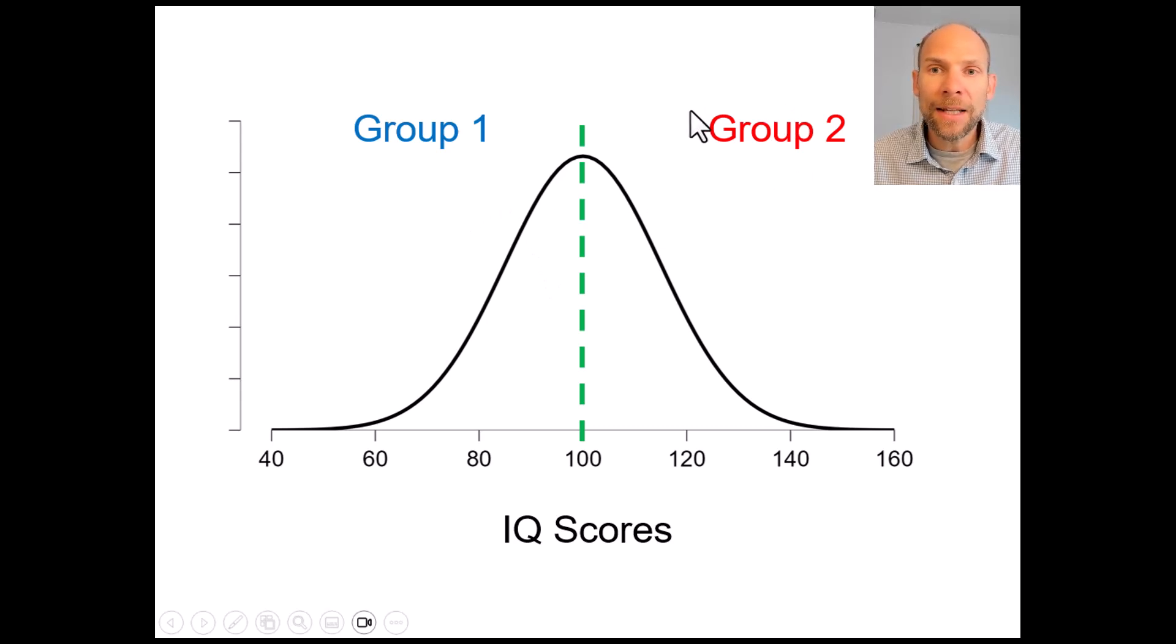Likewise in group two the higher performing group you also have a huge range of values from 100 to over 140 and all those people are basically treated as the same. So you would be losing a lot of information about individual differences.